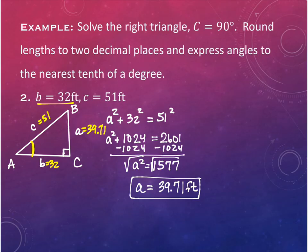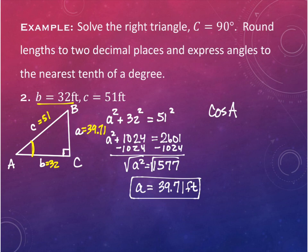Using the given values 32 and 51, what trig function relates 32, 51, and angle A? Cosine. The cosine of angle A equals the adjacent side, which is 32, over the hypotenuse, which is 51.